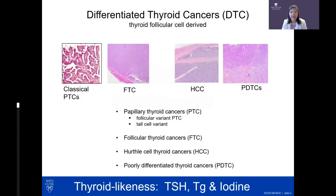When talking about iodine approaches, we're specifically discussing differentiated thyroid cancer — thyroid cancers that retain thyroid-like properties: responsiveness to TSH, secretion of thyroglobulin, and the ability to target iodine via the iodide channel. These include papillary, follicular, Hürthle cell, and poorly differentiated thyroid cancers, among others.